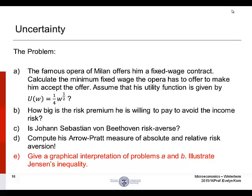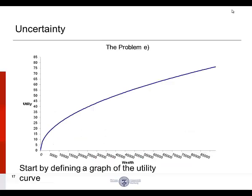Now we're on part E. Give a graphical interpretation of problems A and B. Illustrate Jensen's inequality. Jensen's inequality states that the utility of expected wealth is greater than or equal to the expected utility of wealth. Let's start our graph with a utility curve. On the y-axis, we have utility, and on the x-axis, we have wealth. The curve illustrates utility as a function of wealth.